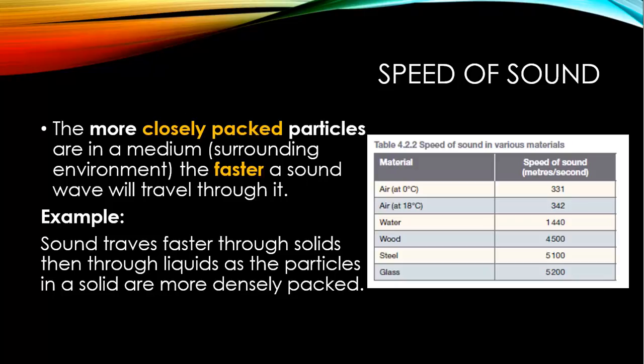If we look at our table here on the right, we can see the air at a temperature of zero degrees. The sound only travels at 331 meters per second through it. If you compare that to glass, sound travels at 5200 meters per second in there. That's a crazy difference. That's because the particles in glass are way more tightly packed together than they are in air at zero degrees Celsius.